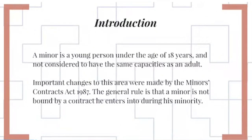A minor is a young person under the age of 18 years. A minor is not considered to have the same capacities as an adult. One of these capacities is the ability to enter into a legally binding contract. An adult with full mental capabilities has capacity to enter into a contract.